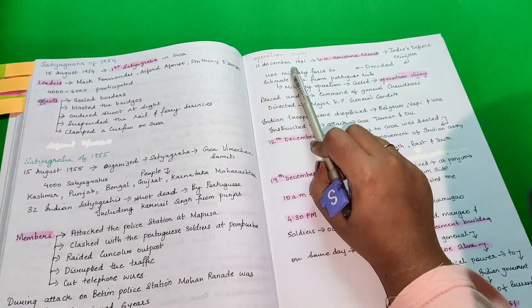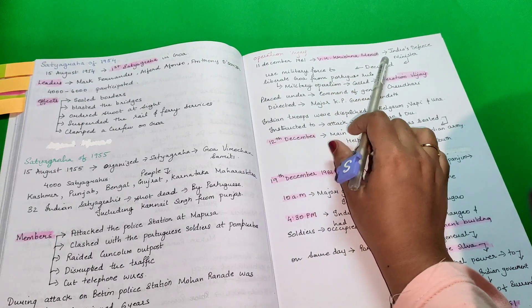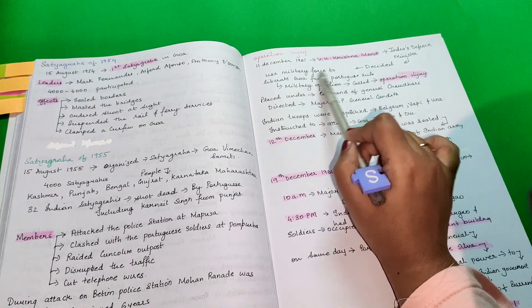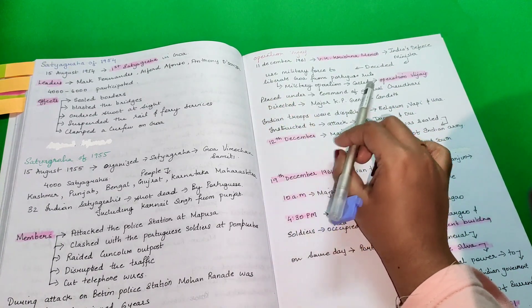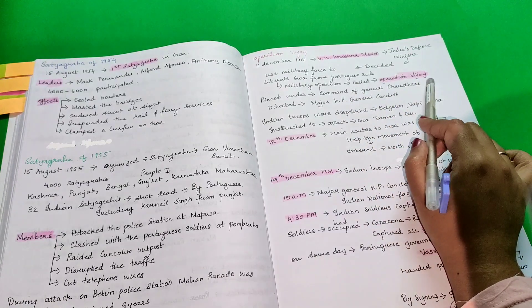Operation Vijay. On 11 December 1961, V.K. Krishna Menon, who was India's defense minister, decided to use military force to liberate Goa from Portuguese rule. This was done by a military operation called Operation Vijay.